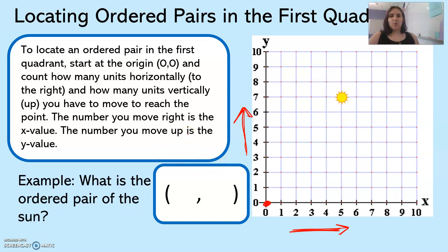So for example, what is the ordered pair of this sun? First we're going to go to the right. How many places starting at the origin do I need to go to get to where the sun is? I move one, two, three, four, five. So I go over five. That becomes my x value, five.